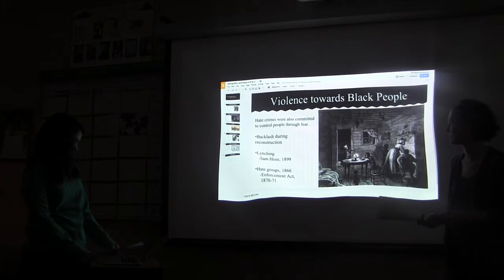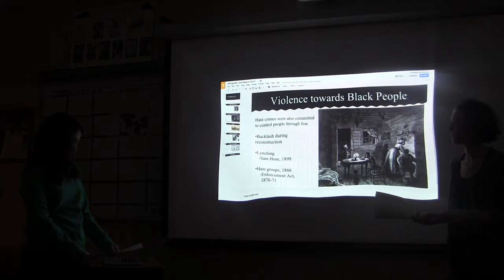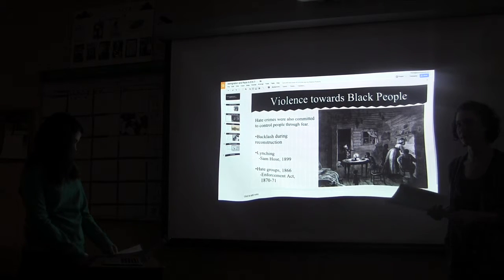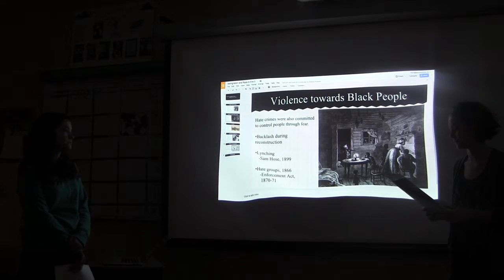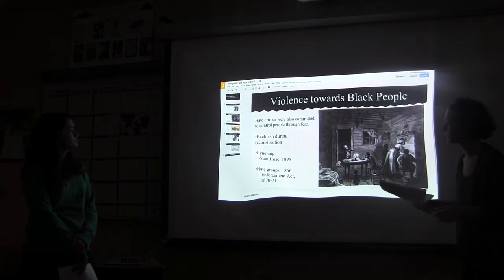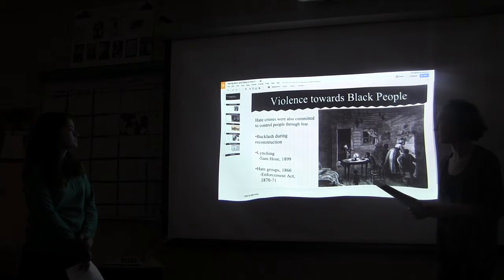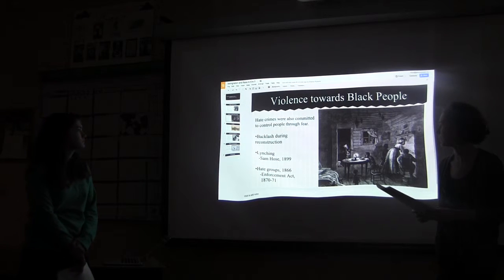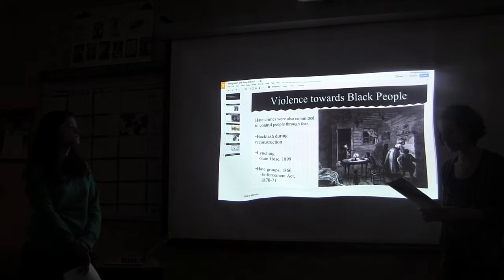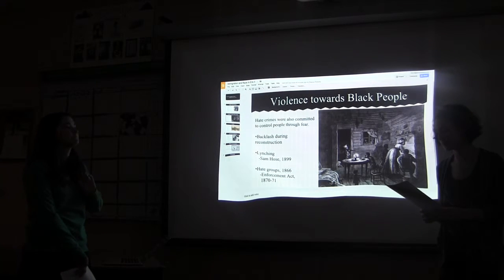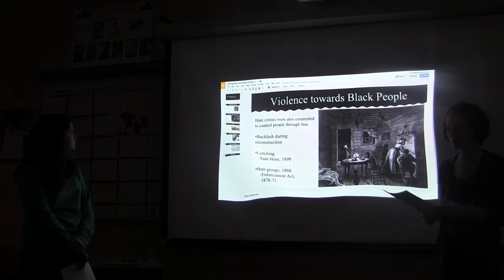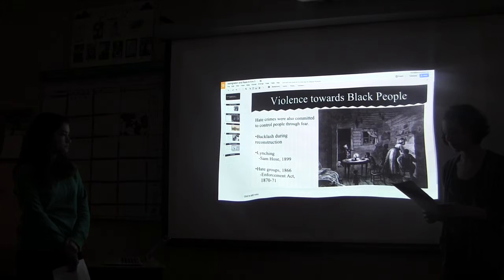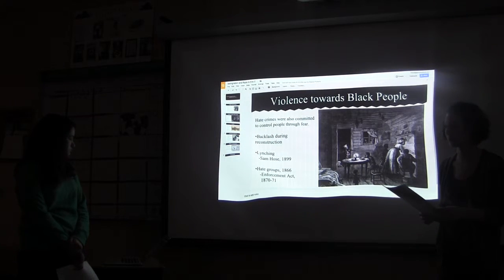There were also interpersonal acts of violence where white people would randomly attack black people they didn't even know, simply because they didn't like them. The KKK and other hate groups became popular. The KKK started in 1866, and they and white mobs murdered roughly 5,000 African Americans between the 1880s and 1950s. Lynching was a very common form of violence, and victims weren't simply hanged — they were tortured before being killed.